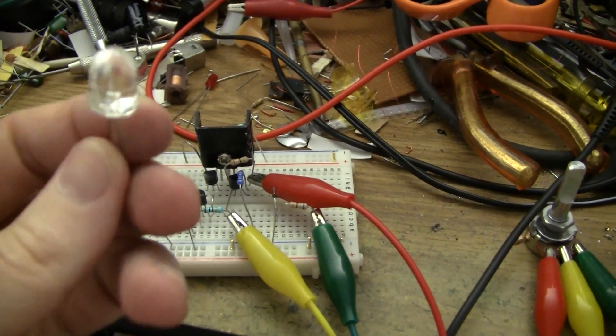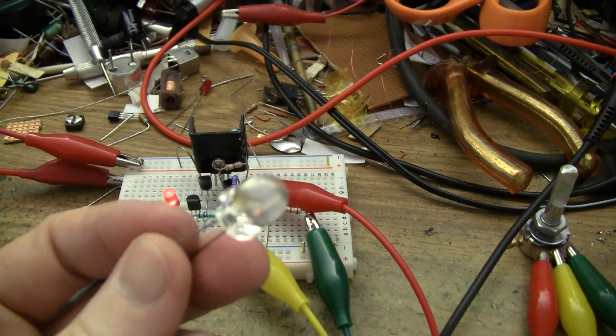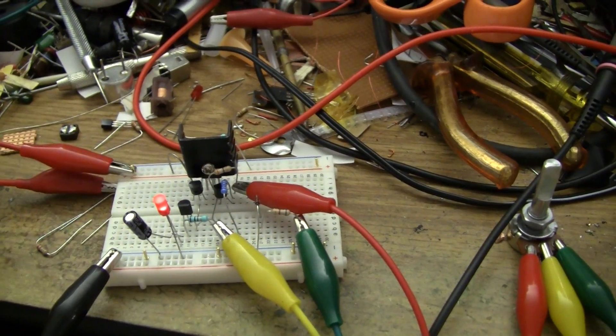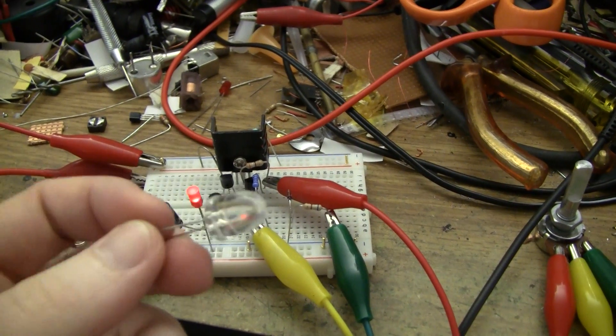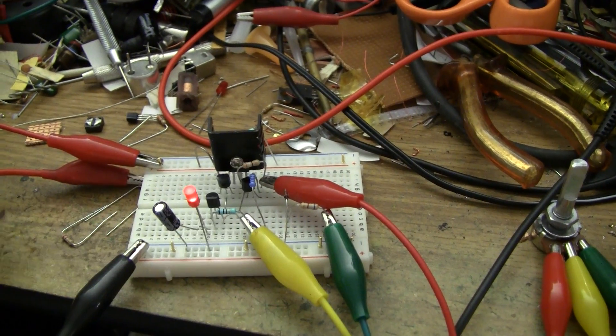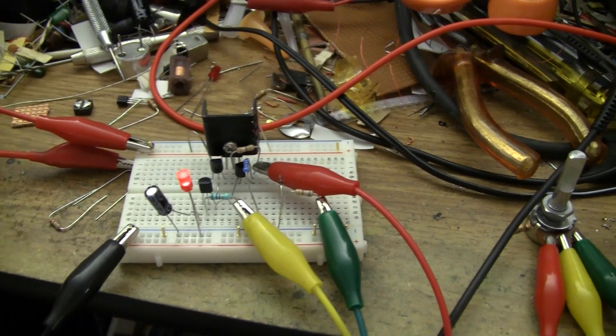For example, you can stick an LED straight across the output of it and it won't blow it up. It's currently set for about 30 milliamps, which is a bit more than what you'd normally run through a LED, but fairly safe. That's probably its biggest feature.